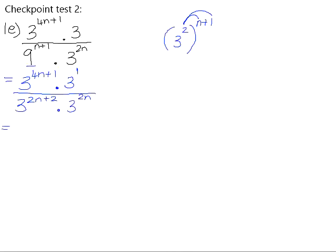We can now simplify by multiplying and dividing the powers that have the same base. When you multiply powers with the same base, you add the exponents. So we will add the positive 1. We will subtract the 2n plus 2, because when you divide powers with the same base, you subtract exponents, and then minus the 2n.